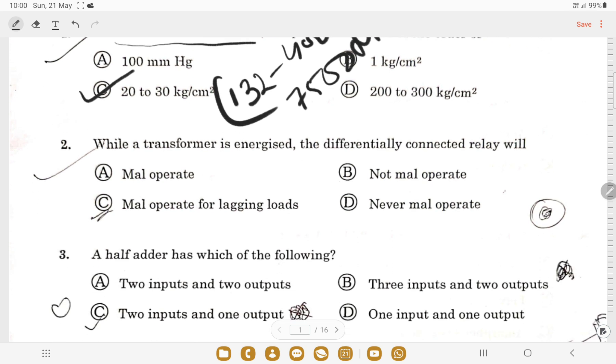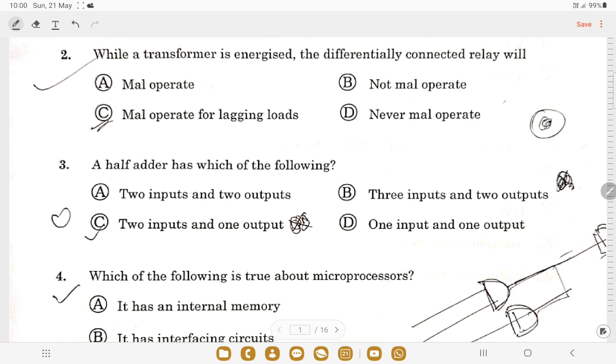Next question: while a transformer is energized, the differentially connected relay will? Now when it is energized, the relay will have an inrush of current, so this will maloperate the transformer. Option A is the correct one.